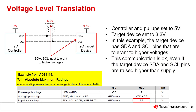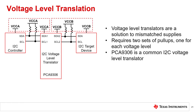The ADS1115 is just one device that has SDA and SCL lines that are tolerant to voltages higher than the supply. Looking at the absolute maximum table from the datasheet, the maximum digital input voltage is 5.5 volts, regardless of the supply voltage. With this type of I2C line, the target device can tolerate pull-up voltages higher than the supply, allowing for I2C communication between the devices even with different supply voltages. With mismatched supply voltages, the best option may be to use a special device to bridge the two supplies. This figure shows an example of using an I2C voltage level translator to bridge the communication between two different supply voltages. There are two sets of pull-ups, one for each voltage level. As a common voltage translator, the PCA9306 allows for communication between different supply levels.